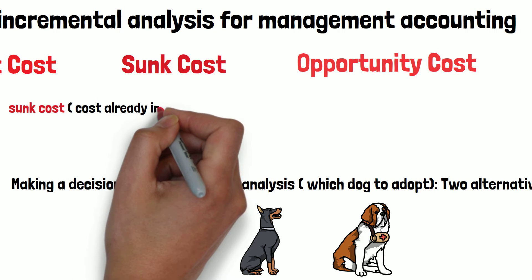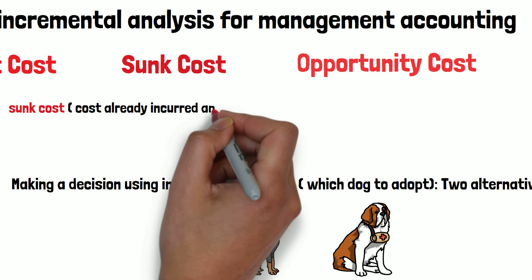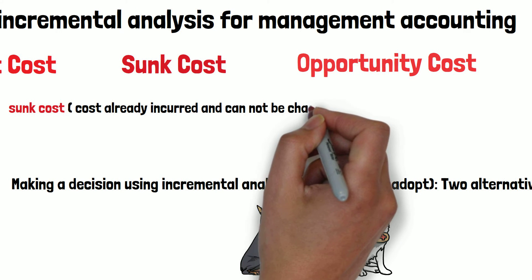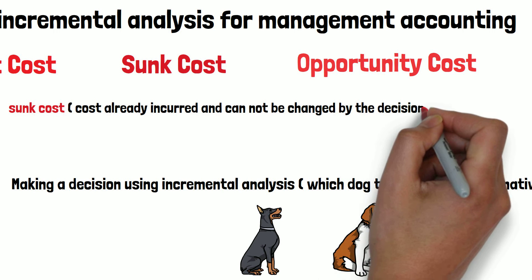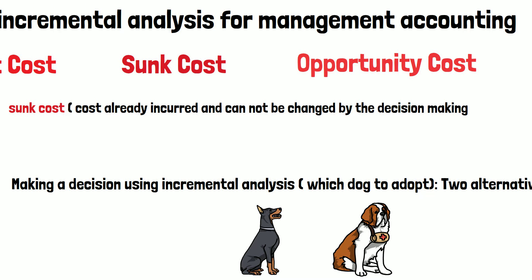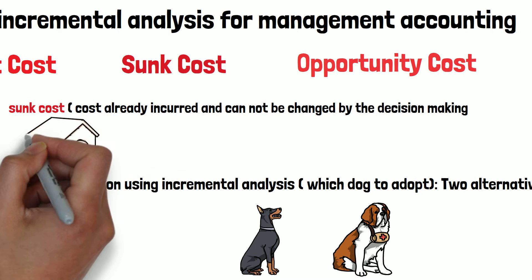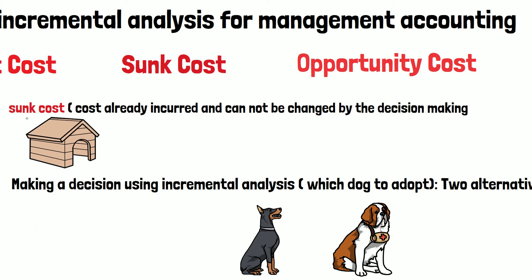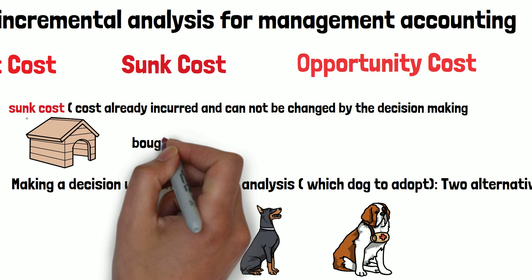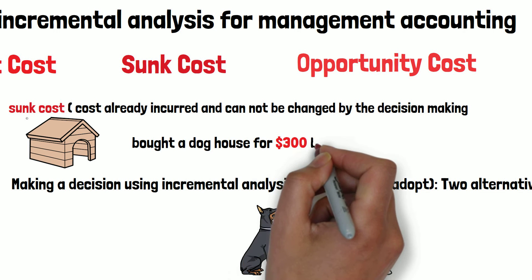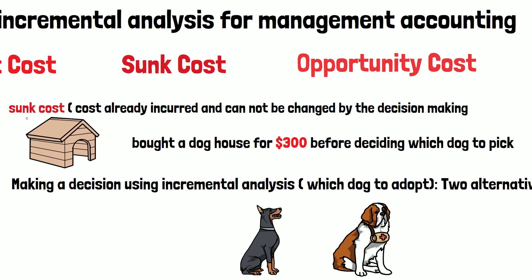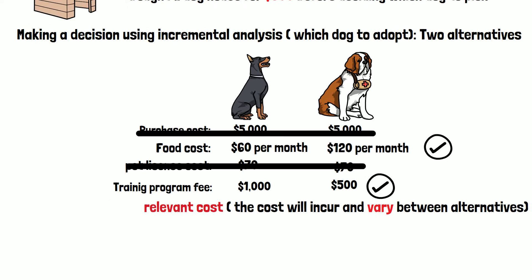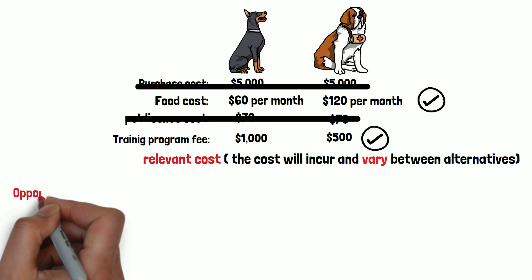Sunk costs are costs already incurred and cannot be changed by the decision making. It doesn't matter which dog you pick — you cannot change those costs already incurred. For example, if I have already purchased a dog house costing $300 before I make a decision on which dog to go with, that $300 for the dog house is a sunk cost.